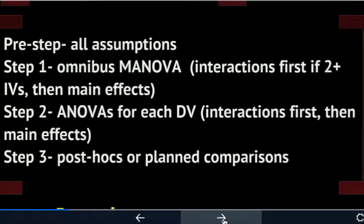For any ANOVA in step two that's significant, you go on and do either a post-hoc type comparison, simple effects, planned comparisons, or trend analyses as you move forward. But you don't go to step three if your ANOVA was not significant — you stop at that point.